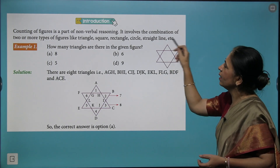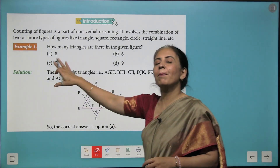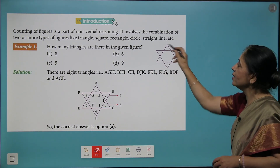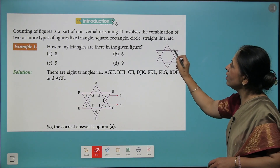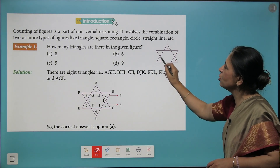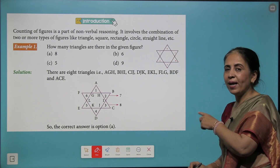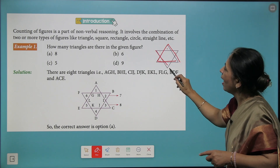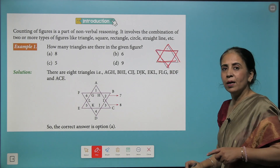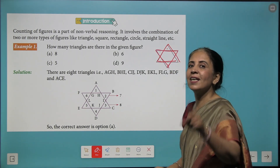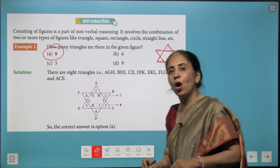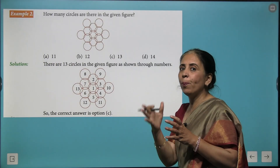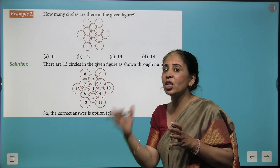Moving further to more questions — how many triangles are there in this figure? Let's count the outer triangles: there are six. Along with that, we have one triangle here and one bigger triangle here, so six plus two makes eight. And eight is your correct option. Remember, you need to open up your brain and verify it once again before you mark the correct answer.